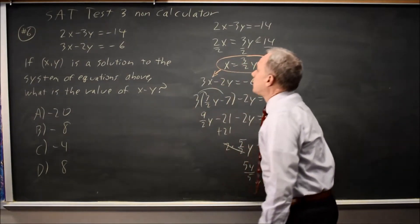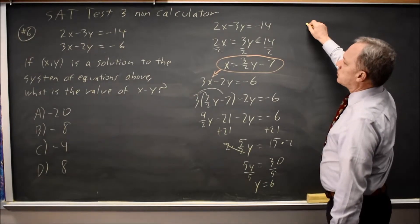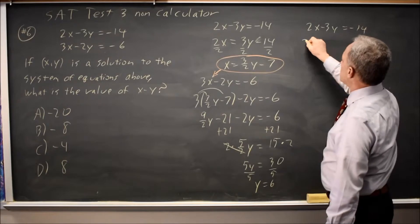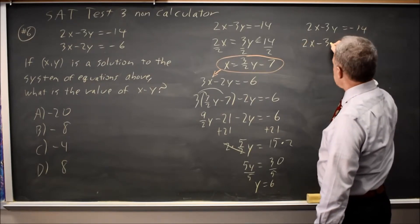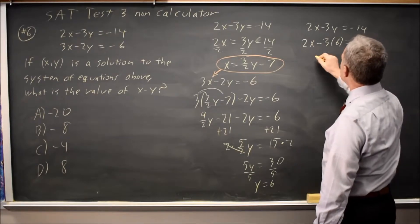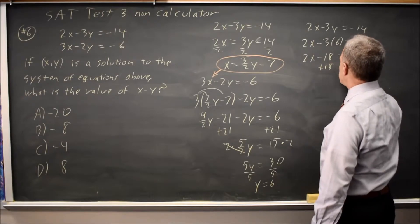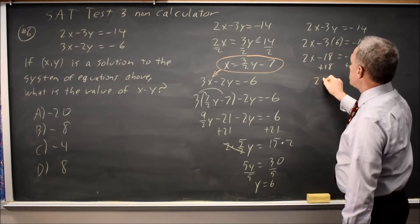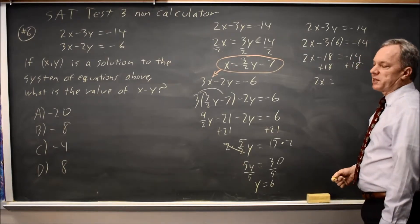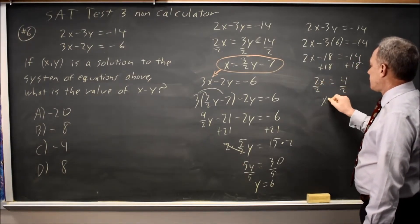Now that I know what y is, I can substitute that into either equation and find x. So 2x minus 3y equals negative 14. 2x minus 3 times 6, because y is 6, equals negative 14. 2x minus 18 equals negative 14. Add 18 to both sides. And I have 2x equals negative 14 plus 18, which is 4. Divide by 2, x equals 2.